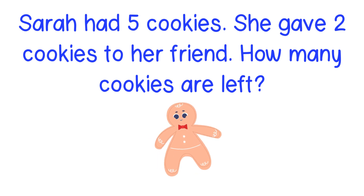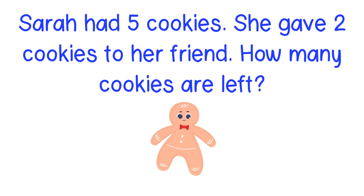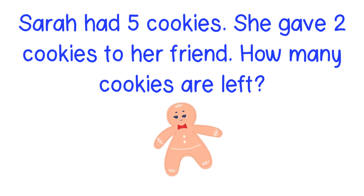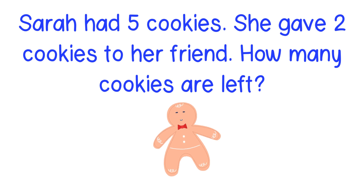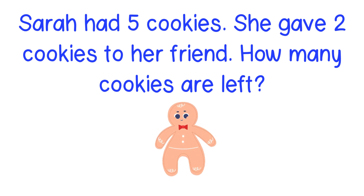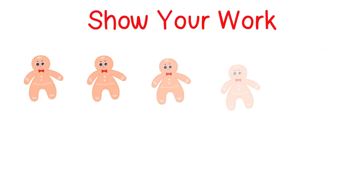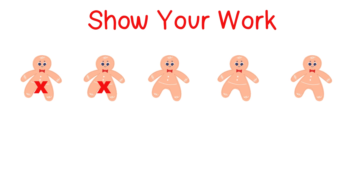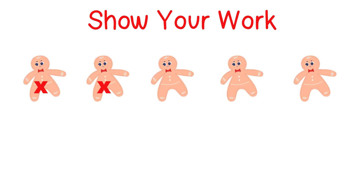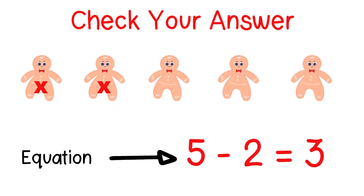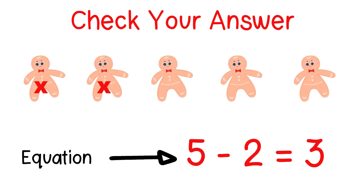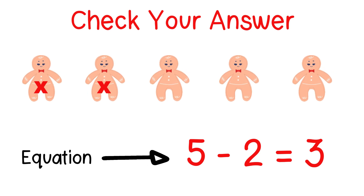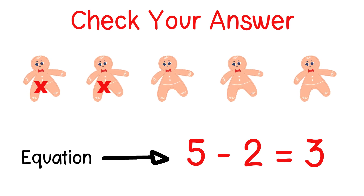Now let's do this one together. I want you to draw five circles on your paper: one, two, three, four, five. Now cross out two of those circles — you can put the letter X on top of each one: one, two. How many circles are left over? How many circles do not have an X on top? Here's my picture that shows the five cookies Sarah started with and what happened when she gave two cookies away. I placed an X on top of two cookies to represent that those are the two she gave away. If you said three cookies are left, then you are correct. Notice my equation on the bottom: when you start with five and take away two, you have three left over.